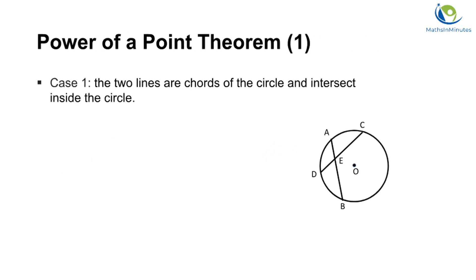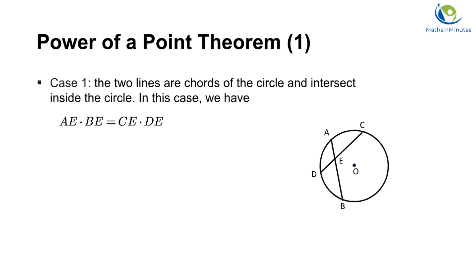There are three cases for the Power of a Point Theorem. In case 1, two chords AB and CD intersect at point E. In such a case, we have AE times BE equal to CE times DE.